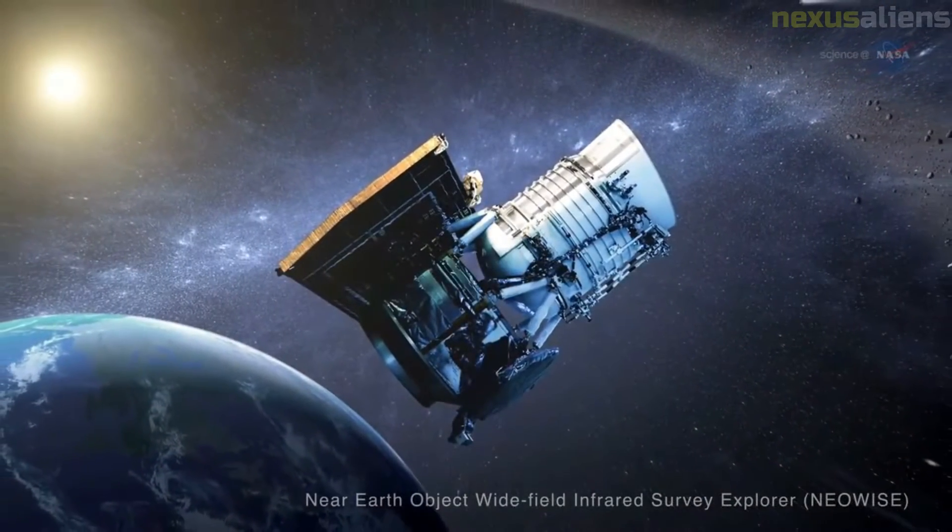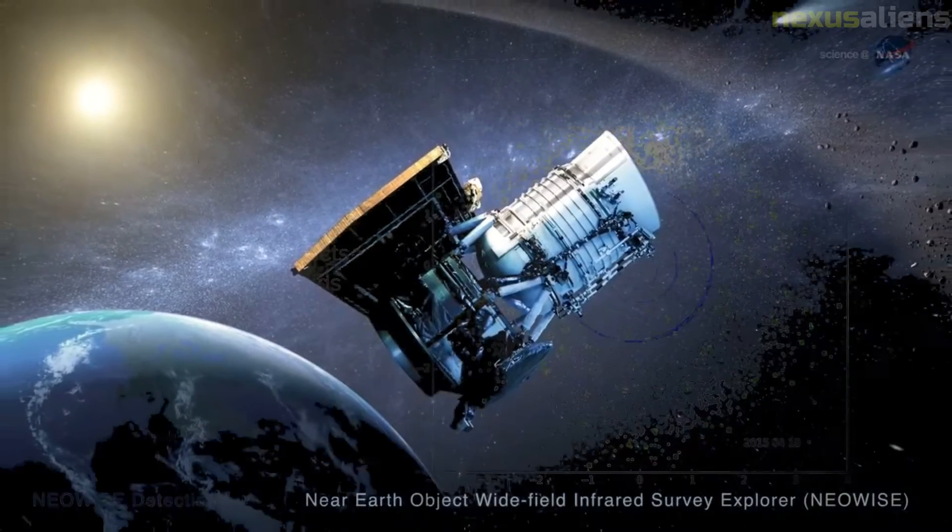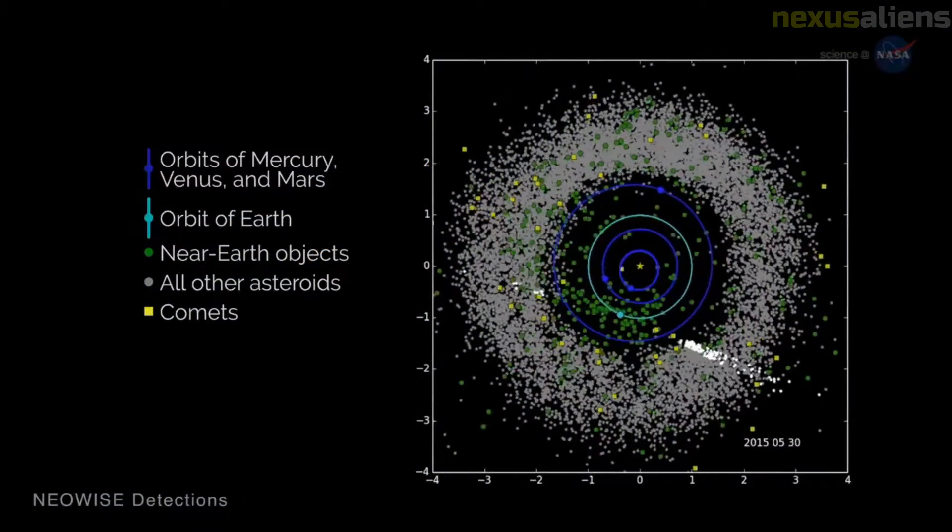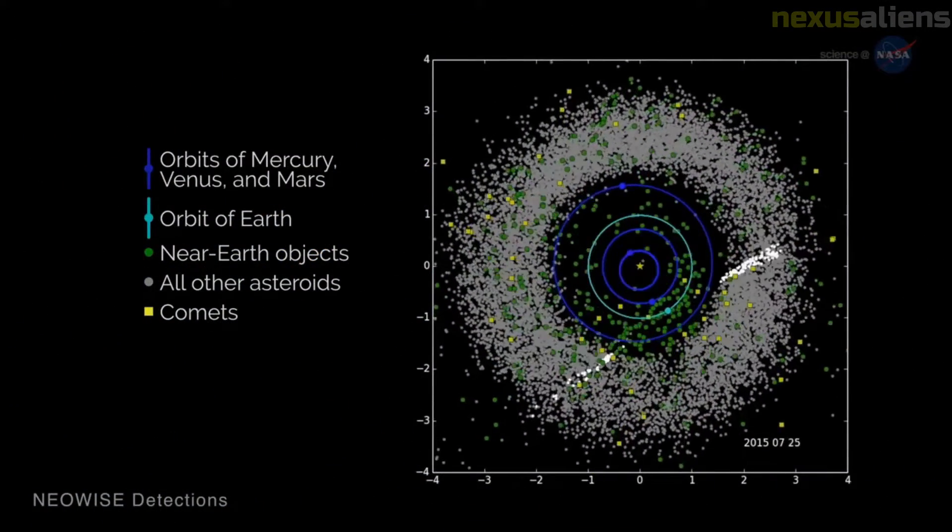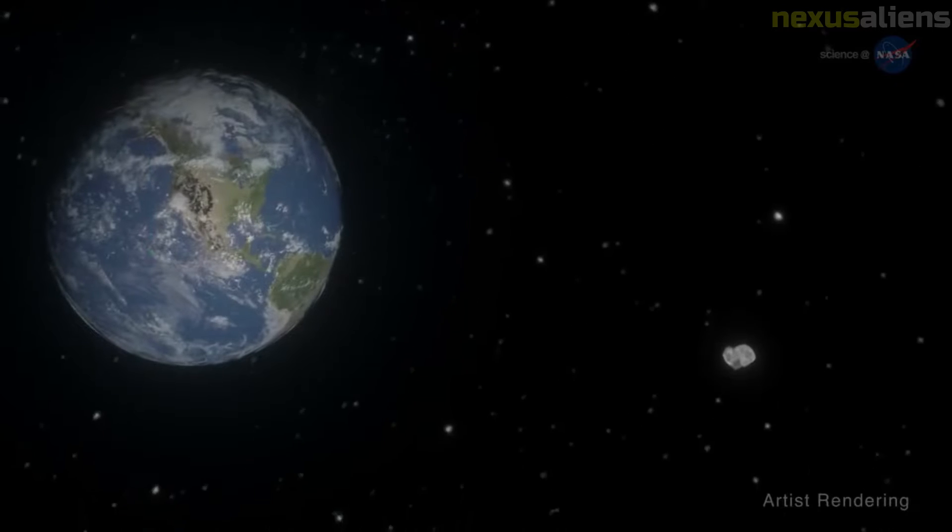Accounting for Vega's proper motion, it would have taken Oumuamua 600,000 years to reach the solar system from Vega. As a nearby star, Vega was not in the same part of the sky at that time.